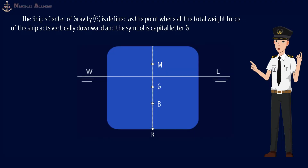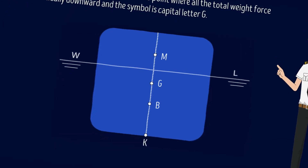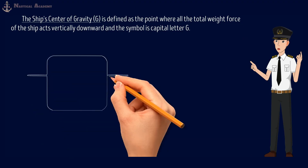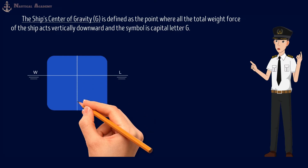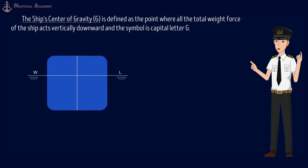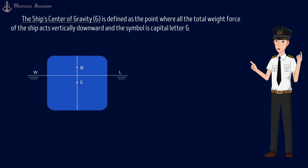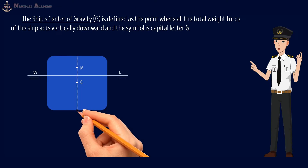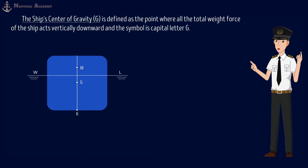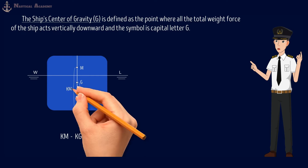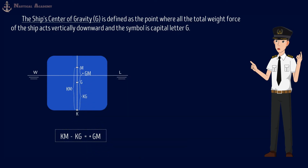The ship should be in a state of stable equilibrium before she departs at port. It is said to be in stable equilibrium when, if she is inclined, she will return to its upright position. If this is the ship's transverse section, at the center will be the ship's centerline. In stable equilibrium, the ship's center of gravity or G must be below the metacenter or M, so that we have a positive initial metacentric height or GM. Since our keel can be found at the bottom with the symbol K, if we subtract KG — the vertical distance from the keel to the ship's center of gravity — from KM, the vertical distance from the keel to the metacenter, we must have a positive GM, or positive initial metacentric height. That is said to be the ship is in a state of stable equilibrium.